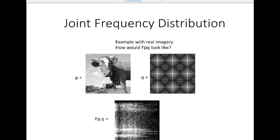Hello, this is Fawad Khan. In this video I will show you how to create a joint frequency distribution. I have two images: the first is a grayscale image of a cow represented with variable P, and the second image is a pattern represented with variable Q. We have to find the joint frequency distribution f(P,Q) for these two real images.